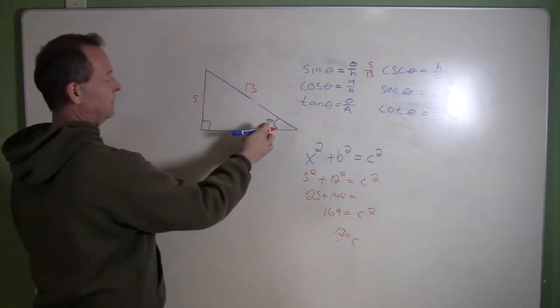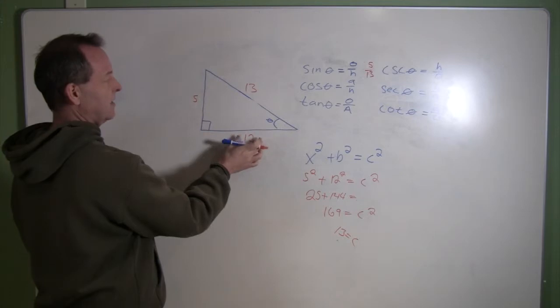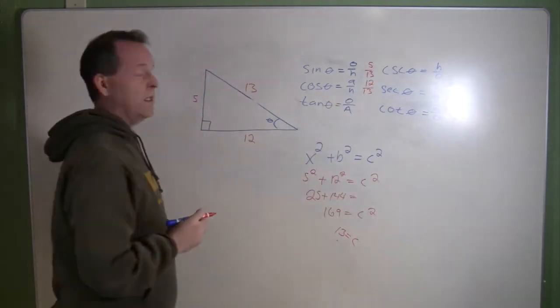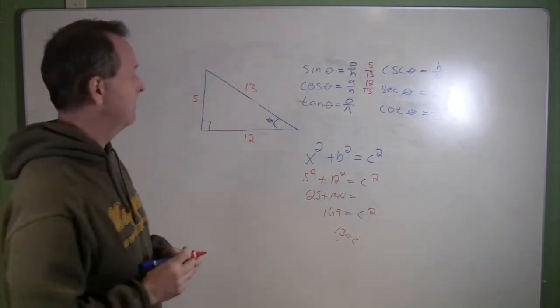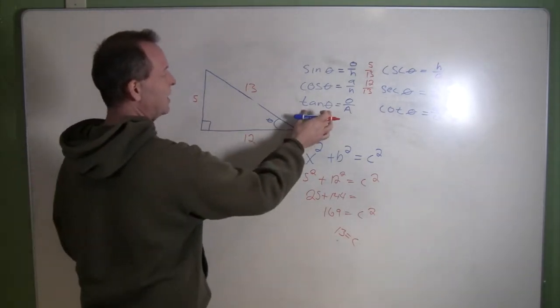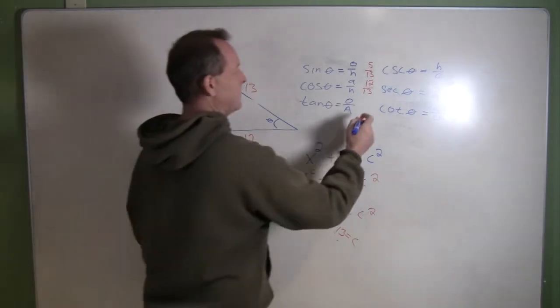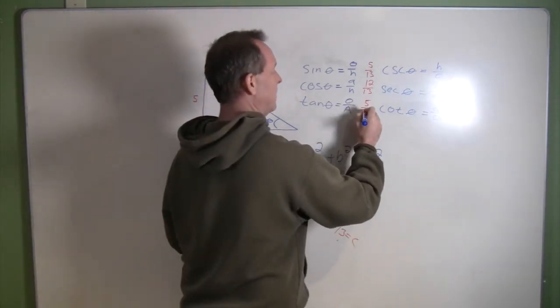Cosine of theta is its adjacent over hypotenuse. So the cosine of theta would equal 12/13. Tangent of theta is opposite over adjacent. So that ratio is 5/12.